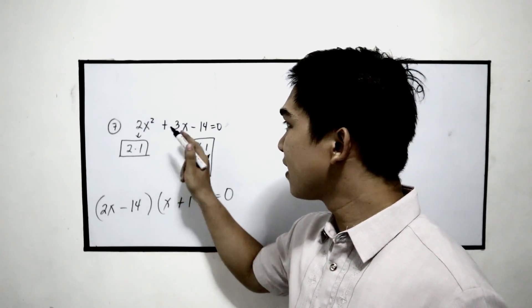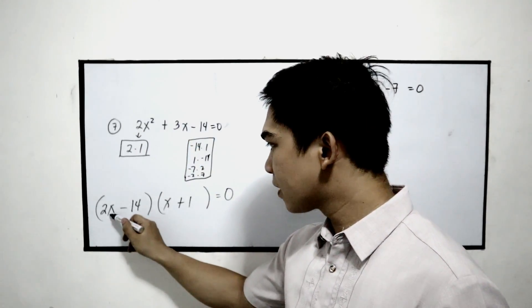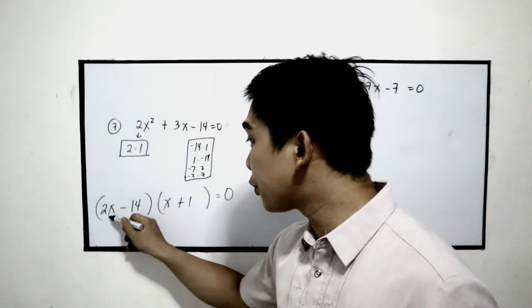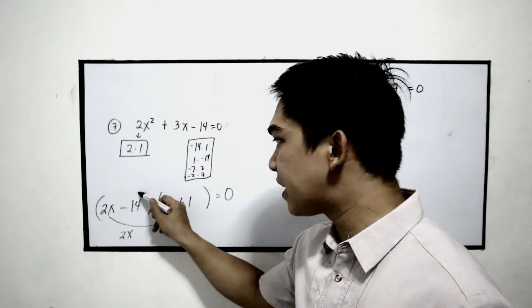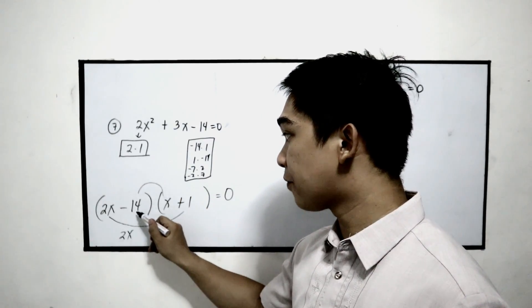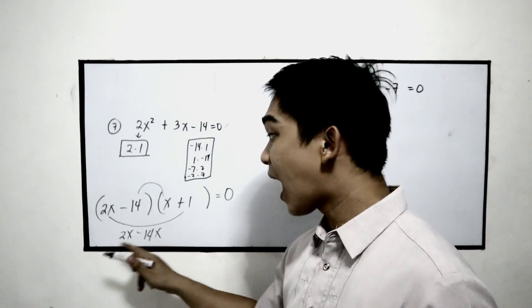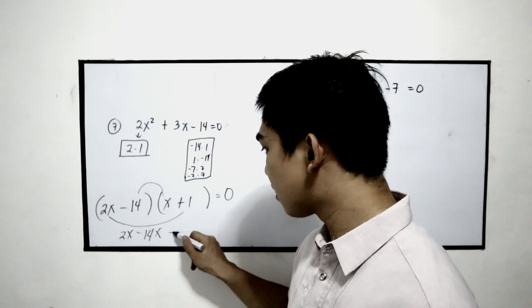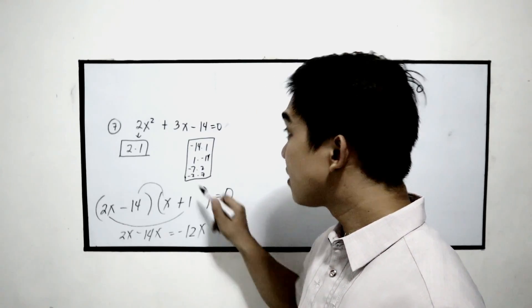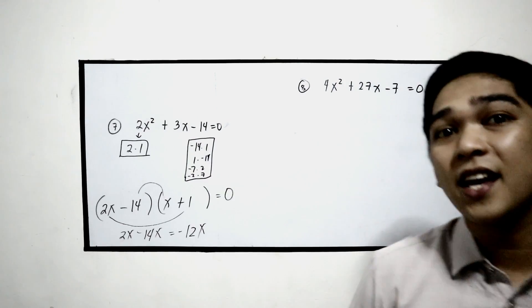Now let us check the middle term. To check the middle term, just multiply the outer to outer term, that is 2x, and inner to inner term, negative 14 times x, negative 14x. And that is negative 12x, which is not equal to the middle term. That means that factor is incorrect.